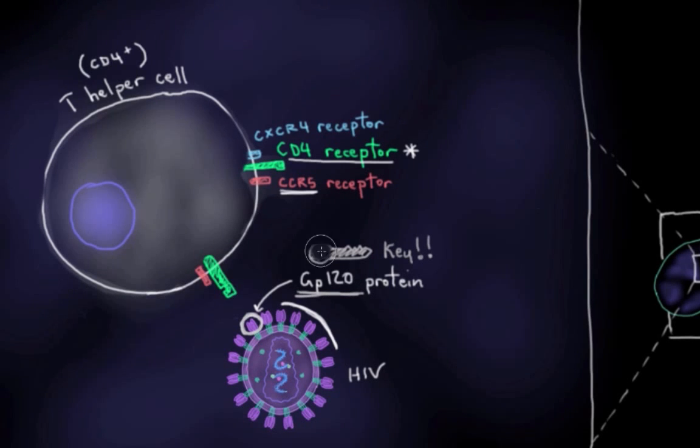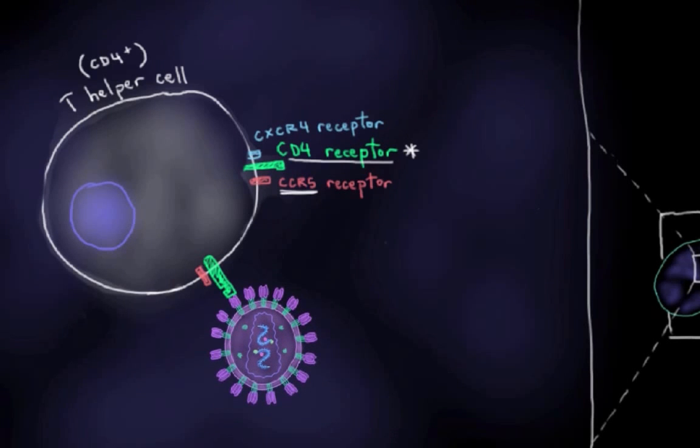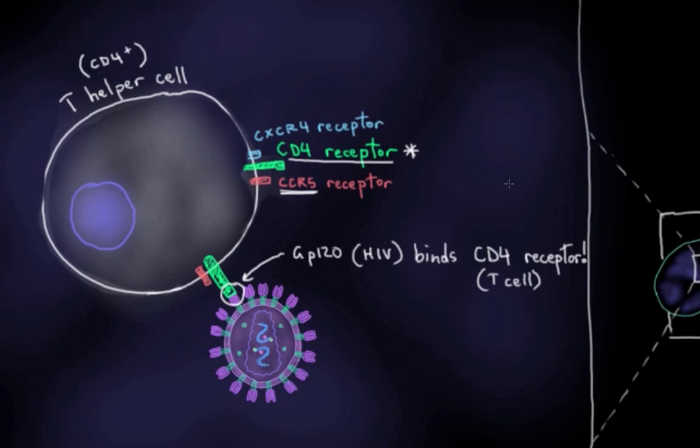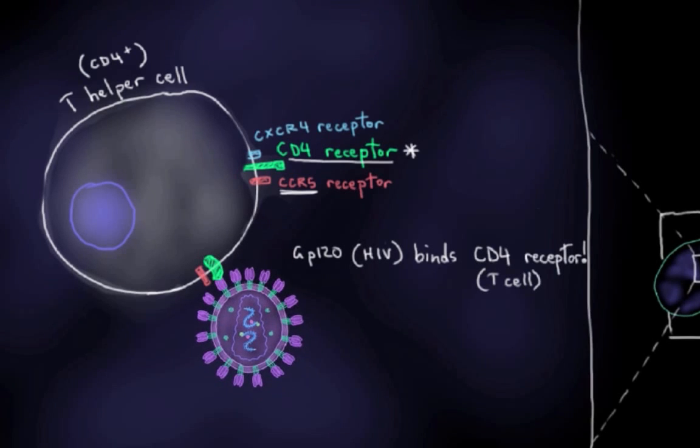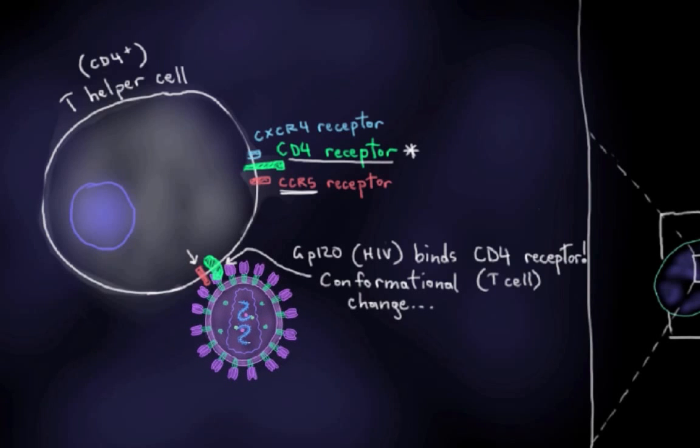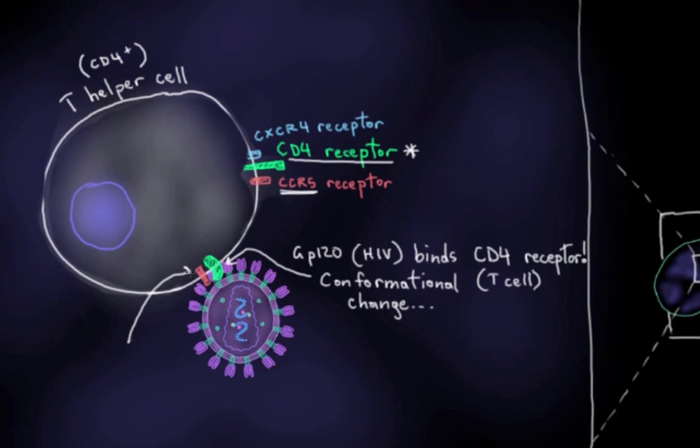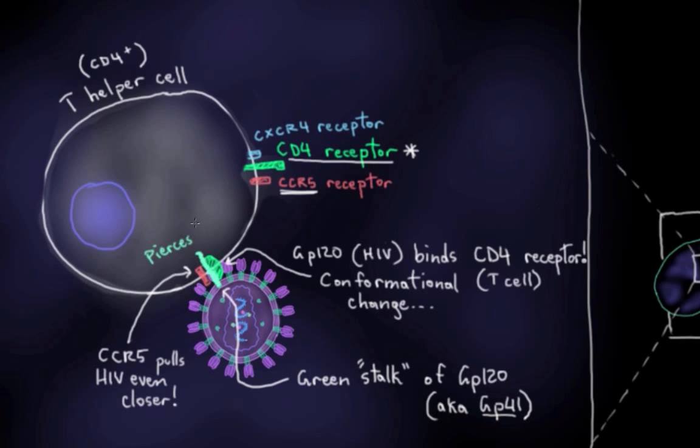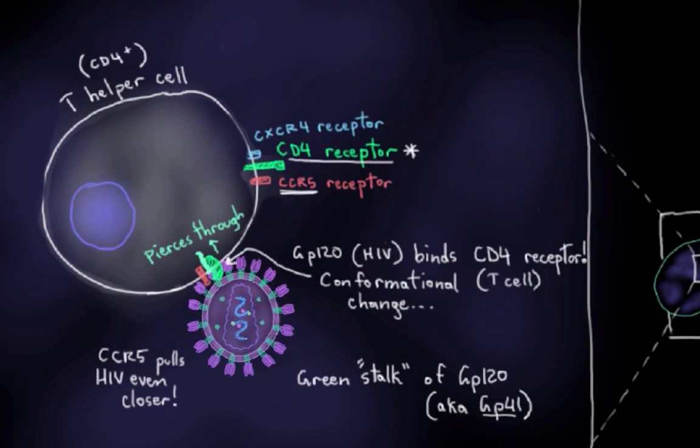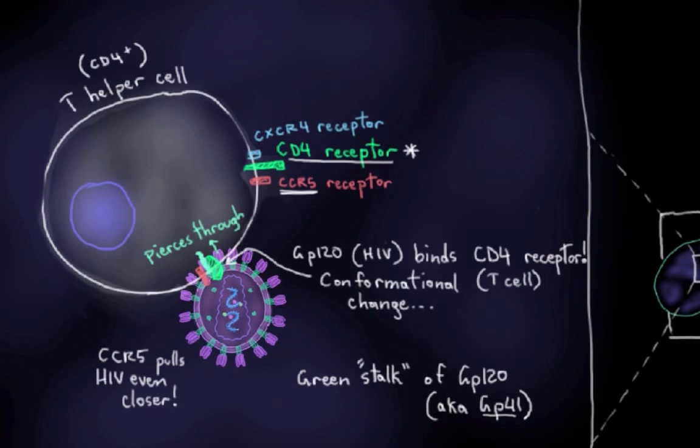So how does it work? Well, GP120 on the HIV envelope first binds the CD4 receptor on a T helper cell. This binding between the two induces a conformational change in the CD4 receptor protein here, and it allows our coreceptor here, either CCR5 or CXCR4, to grab hold of this complex and pull the viral membrane and the T cell membrane closer together. And when they get close enough, this little stalk here, the stalk of the GP120 protein, it pierces through our T cell membrane, and it pulls the viral and T cell membrane even closer together. And what ultimately happens is that the two membranes will fuse together.